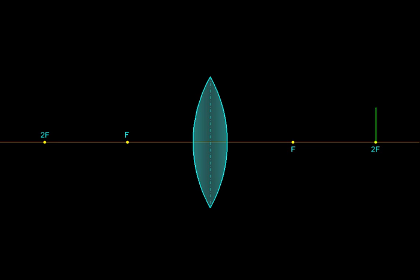Suppose we have been given an object which is resting on the axis like this. Then the image can be found by using rays coming from this object and striking the lens. So here is our first ray. It is parallel to the axis, and a convex lens makes such rays pass through the focus on the other side. So it gets bent and passes through the focus on the other side.